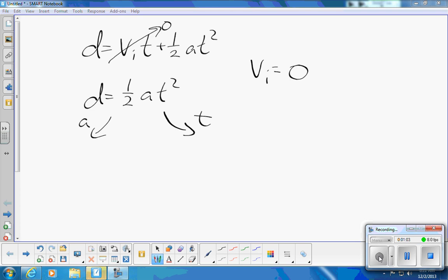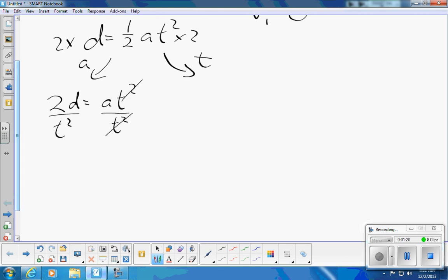So to get rid of the one half, we multiply both sides by two, and we get 2d is a t squared. Then to get the a by itself, we divide each side by t squared, and you end up with those canceling.